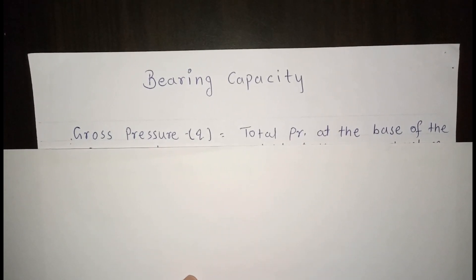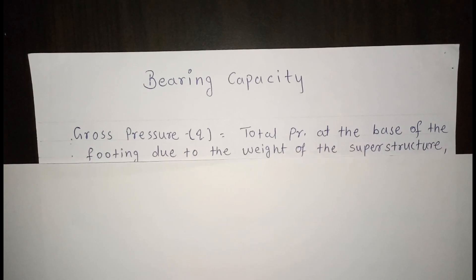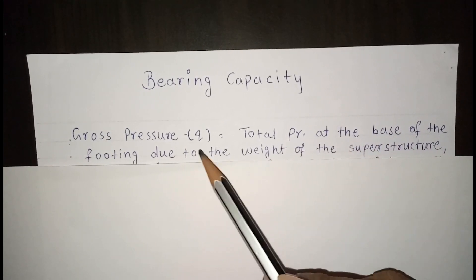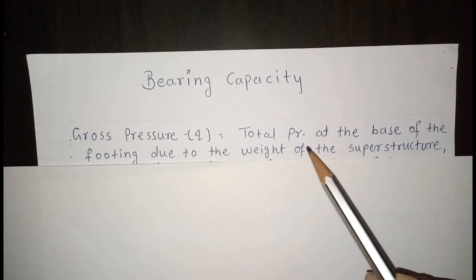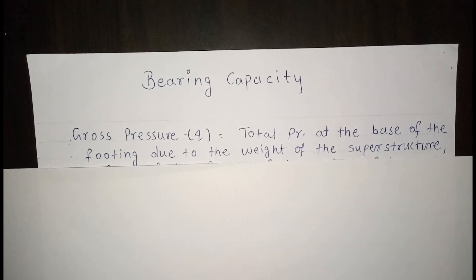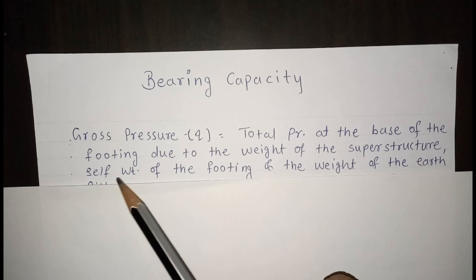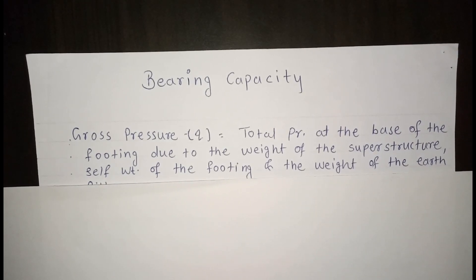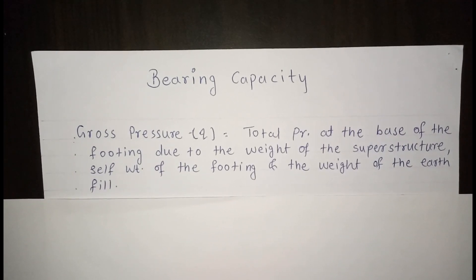The first definition is gross pressure, denoted by Q. Gross pressure is equal to the total pressure at the base of the footing due to the weight of the superstructure, self-weight of the footing, and the weight of the earth fill. This is called the gross pressure.